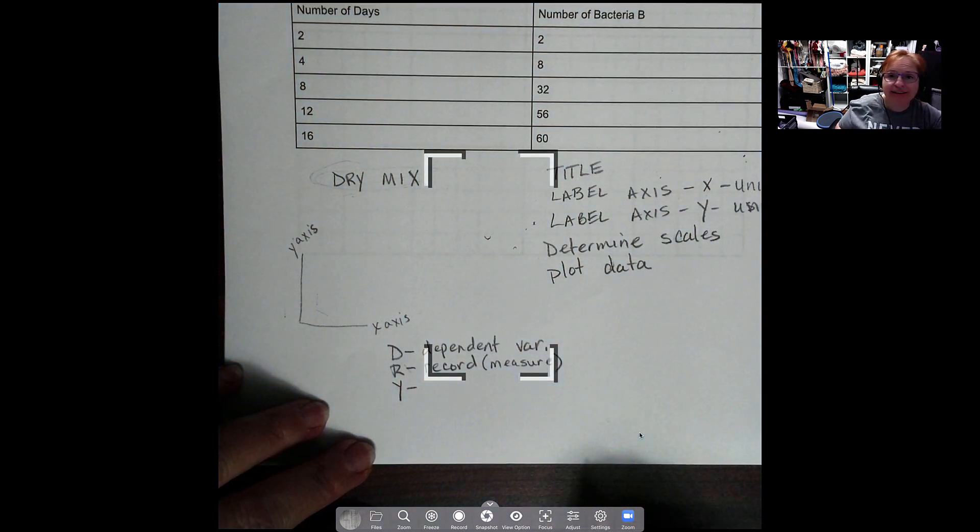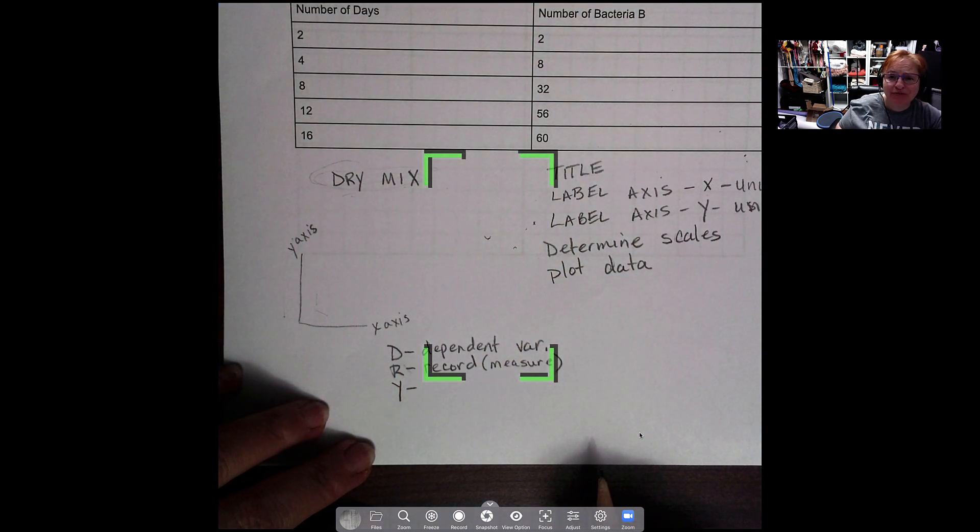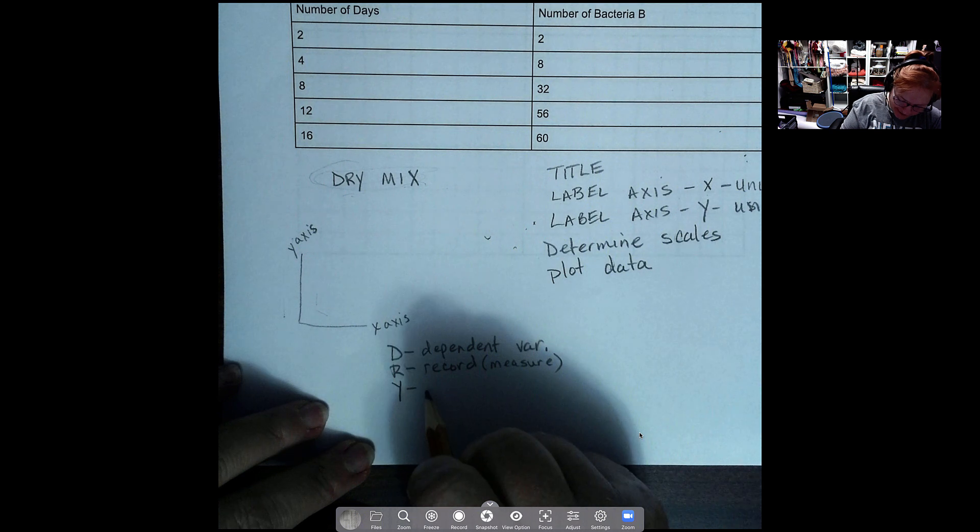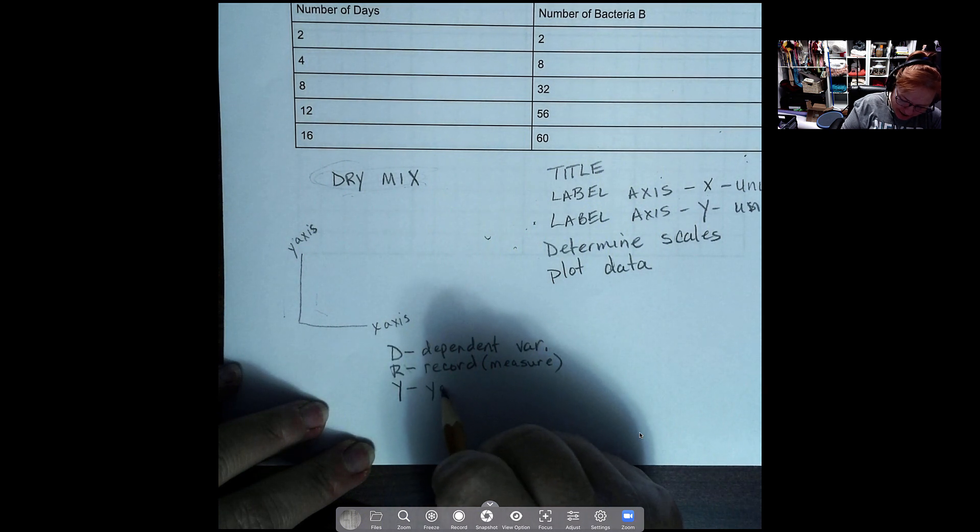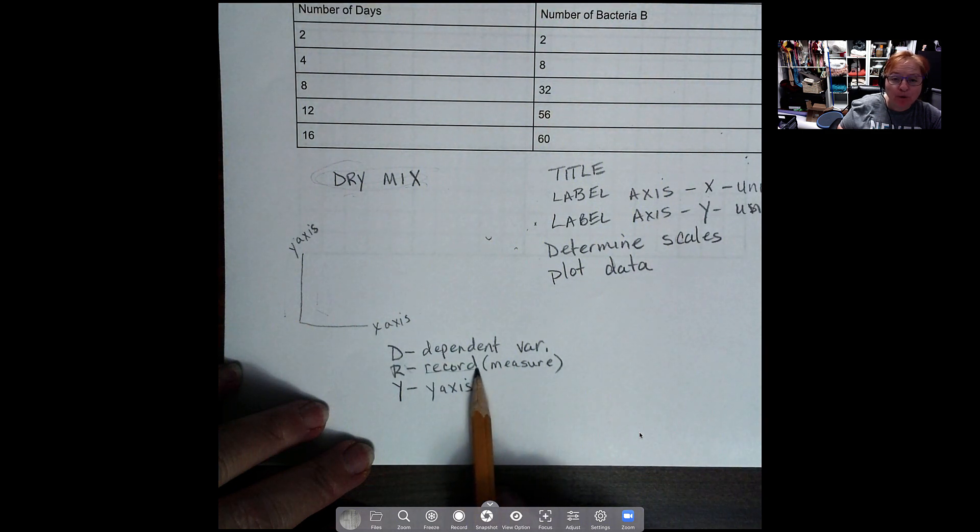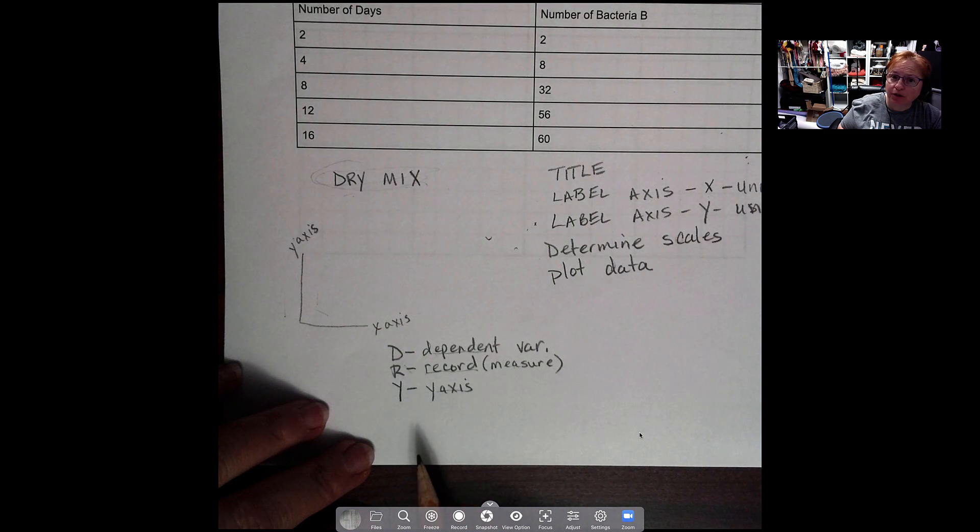Okay, another way is what we measure, but that little M doesn't fit in for this very well, right? What would that be, DMY? And then of course this is the y-axis. So what we measure or really what we record is the dependent variable, and it always goes on the y-axis.